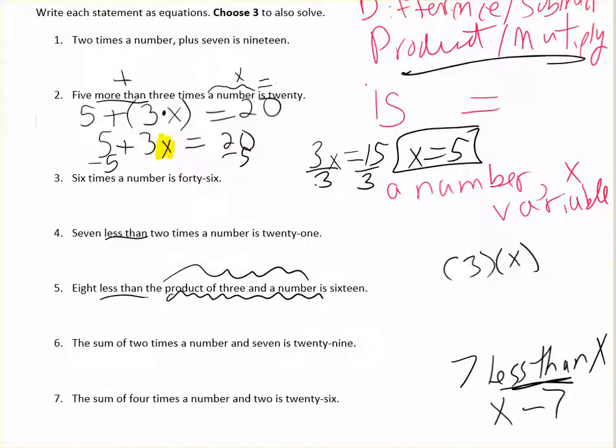And eight less than that means I have to put the three n first and then the minus eight. And then the rest of the equation says is 16. 'Is' is the equal sign. So that's how you would write the equation for number five. Number four is very similar to that. So look at five when you do four.